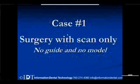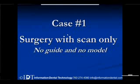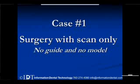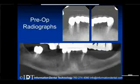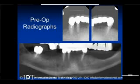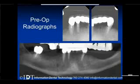The first technique — scan only — is illustrated here. No guide or model was sent, just the scan. The plan was to extract all dentition, and from the scan we made a bone reduction guide and then a bone-supported guide on top of that, with immediate temporization as well.